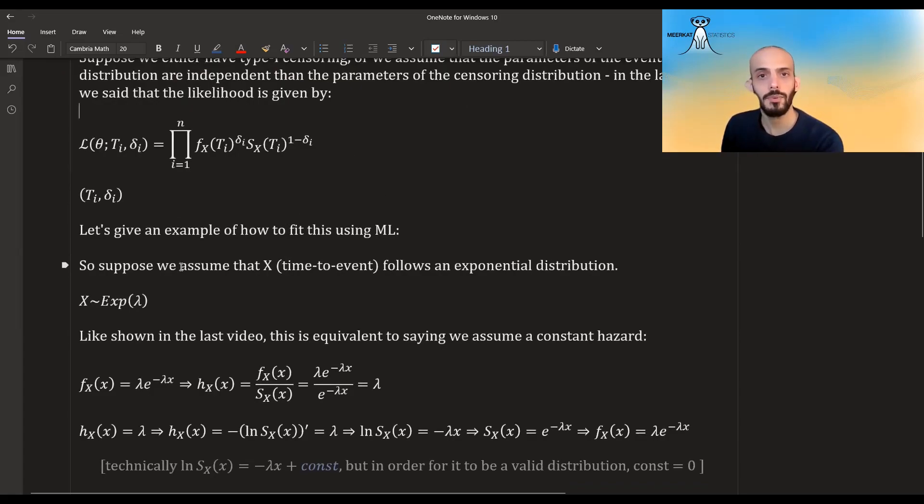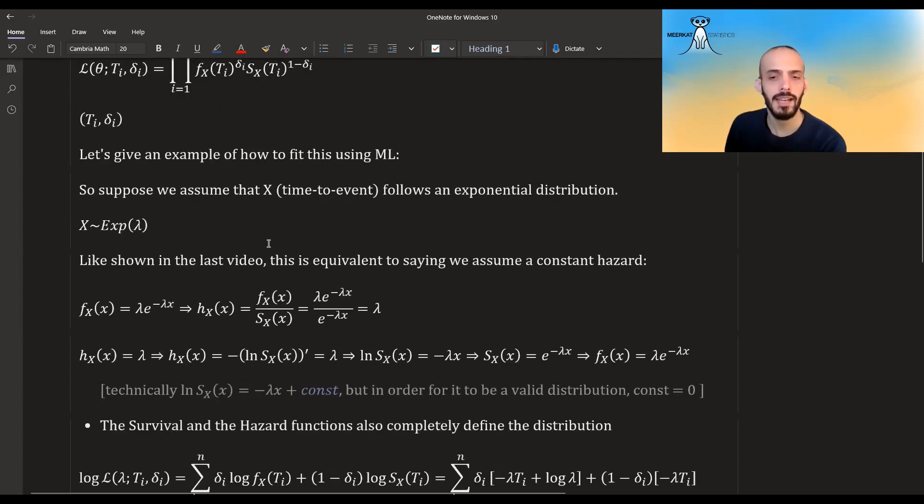Suppose we assume that X follows some exponential distribution. In the last video we showed that this is equivalent to assuming that the hazard is constant. If we take a look at the density of the survival time it's given by this, and we showed that the hazard is actually equal to f(x) divided by S(x), and then these two cancel out and we are only left with lambda. It's also the other way around - if we say that the hazard is a constant then it automatically means that our event times distribute exponentially.